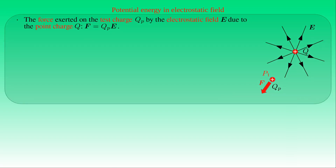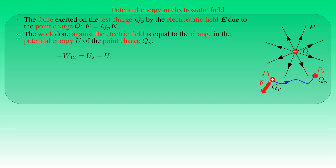By definition, the force F exerted on test charge QP by the electrostatic field due to point charge Q equals the product of QP and electric field strength E. Since the electrostatic field is conservative, the work −W₁₂ done against the electrostatic force depends only on positions P1 and P2 — it equals the change in potential energy U of QP measured at P1 and P2. We can write this change as (1/4πε₀) times the difference between Q·QP/R2 and Q·QP/R1, where R1 and R2 are the distances of P1 and P2 from Q.